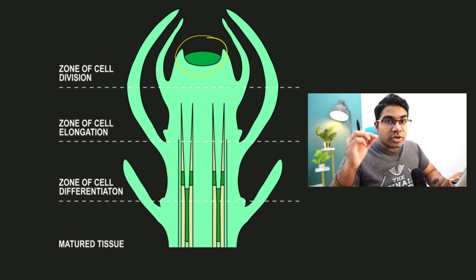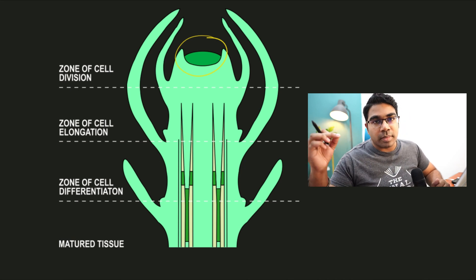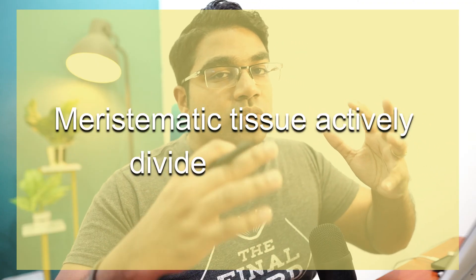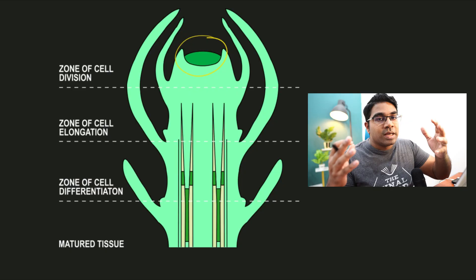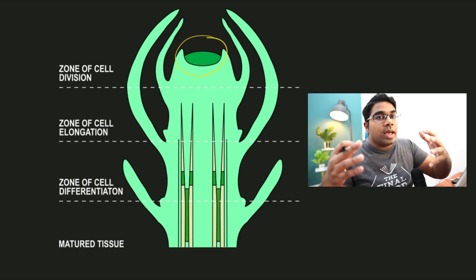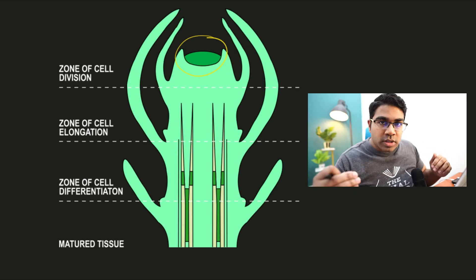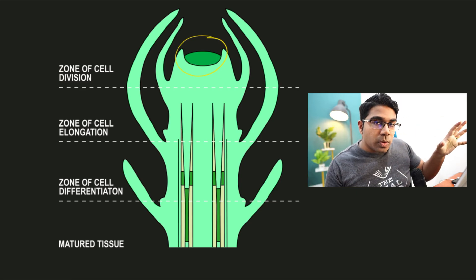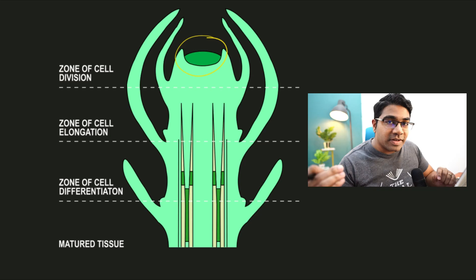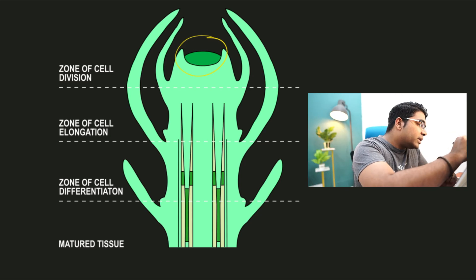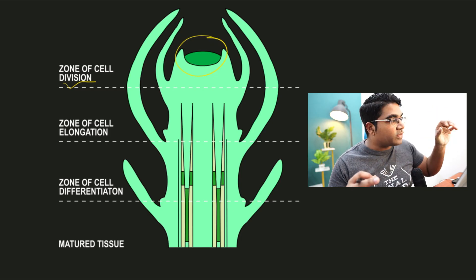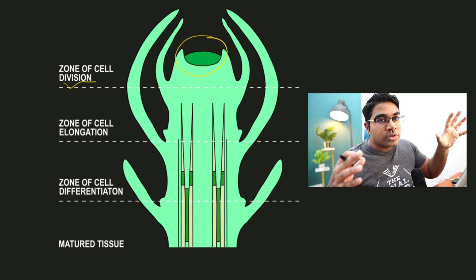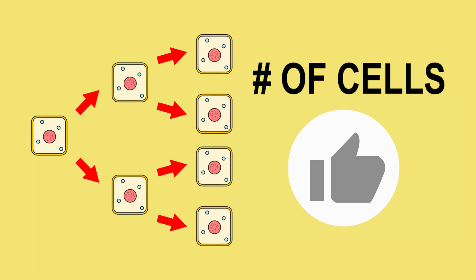Meristematic tissue actively divides by mitosis — this is how cells multiply and initiate growth. The zone where mitosis is taking place actively is known as the zone of cell division. The main activity in the zone of cell division is mitosis, and the number of cells is becoming much greater.